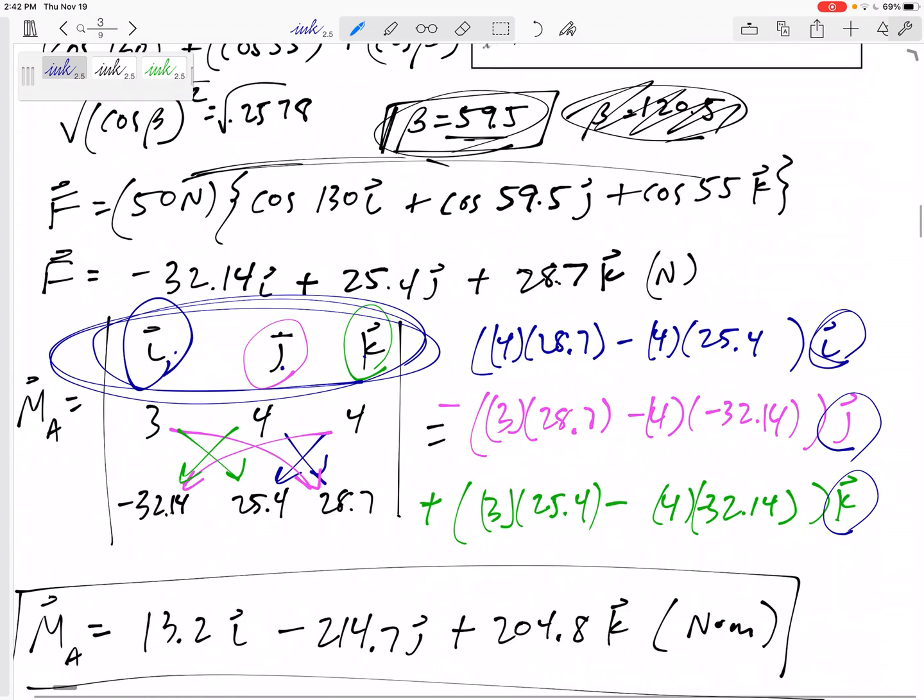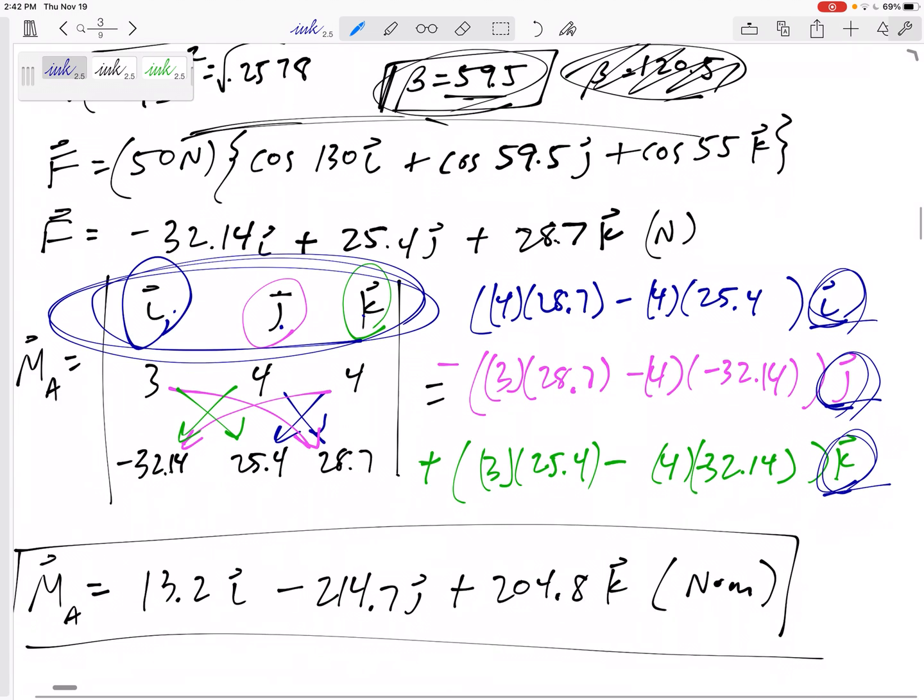And so you wouldn't have these I's, J's, K's here. You would have a number, number, number here, and then you can add up all your values.